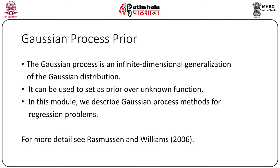What is the Gaussian process? The Gaussian process is an infinite dimensional generalization of the Gaussian distribution — that is, the standard normal distribution, also known as Gaussian distribution. It can be used to set a prior over unknown functions. In this module we describe Gaussian process methods for regression problems. For more detail see Rasmussen and Williams in their 2006 paper.